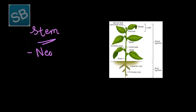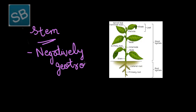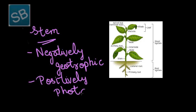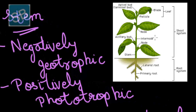Stem is considered as the aerial part of the plant axis. It is negatively geotropic, that is away from gravity, and positively phototropic, that is towards the sun. It basically develops from the plumule. It is distinguished into internodes and nodes. Leaves basically arise from nodes, and the region between two successive nodes is known as internode. An apical bud occurs at the tip of the stem, causing elongation of the main axis. An axillary bud occurs in the axil of the node — the angle formed by the node with the stem from which leaves arise.